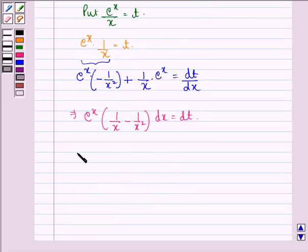So we can write I is equal to integral dt, and integral dt is equal to t plus a constant C. Now we put back the value of t as e^x/x plus C.